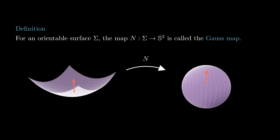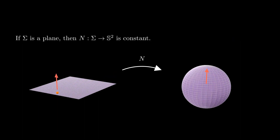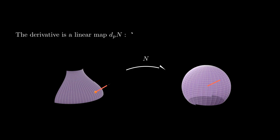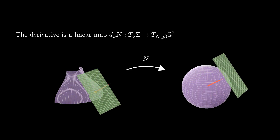Let's see how we can use it to measure curvature. If a surface sigma is a plane, then the Gauss map is constant, so we can think of the derivatives of the Gauss map as a quantitative way of measuring how much a surface is not a plane. If we have a surface sigma and a point p in sigma, the derivative of the Gauss map at p is a linear function from the tangent plane to sigma at p to the tangent plane to S² at n of p. And you may have noticed that these two planes have something in common — they are actually the same plane.